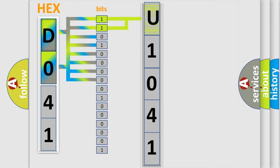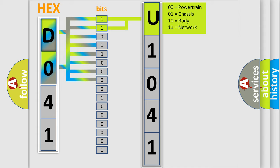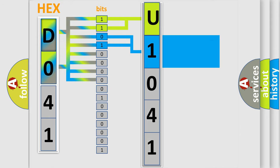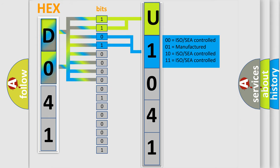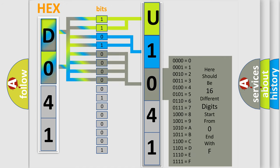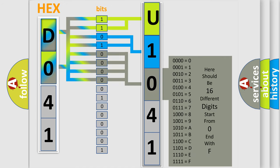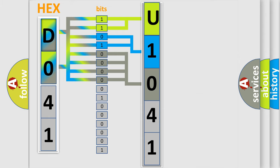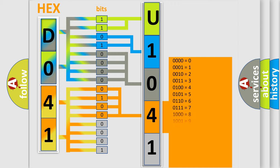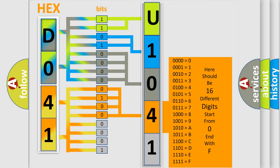By combining the first two bits, the basic character of the error code is expressed. The next two bits determine the second character. The last bit positions of the first byte define the third character of the code. The second byte is composed of a combination of eight bits — the first four bits determine the fourth character, and the last four bits define the fifth character.